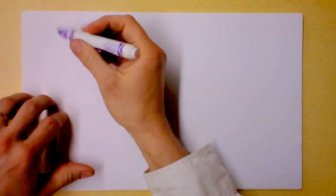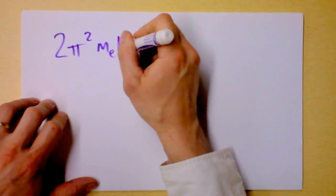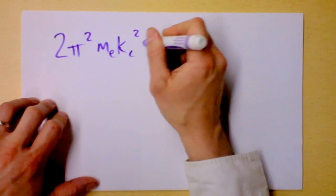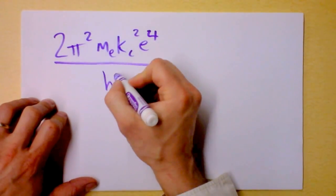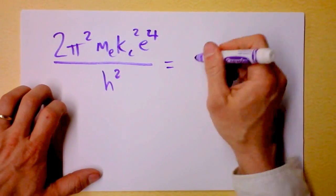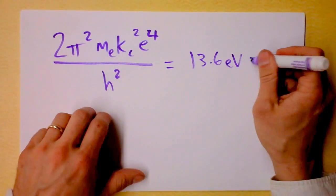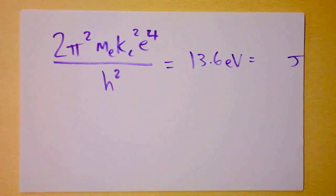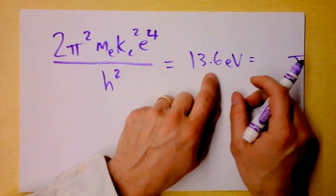My lesson continues from the fact that 2 times pi squared times the mass of the electron times Coulomb's constant squared times the fundamental charge to the fourth power divided by h squared is 13.6 electron volts. It's some number of joules also, which you probably should know, but it's a much handier number of electron volts, and I like to remember 13.6 electron volts.